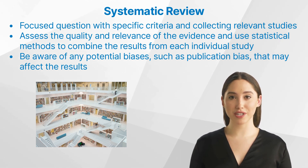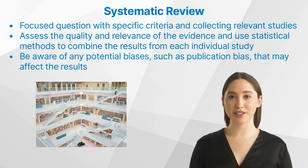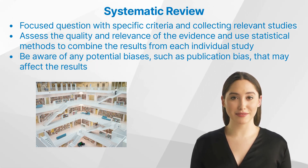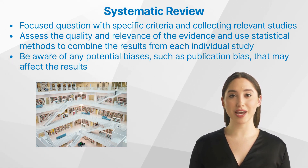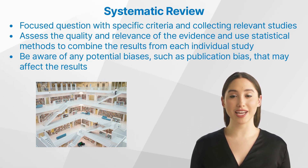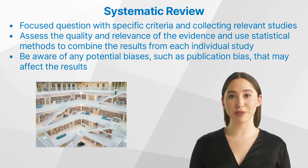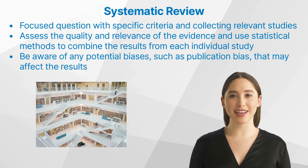Medical writers should ensure that the studies included in their systematic review are of high quality and relevant to the question being asked. They should also be aware of any potential biases, such as publication bias, that may affect the results. Sources for systematic reviews include peer-reviewed journals, published clinical trials, and databases such as PubMed, Embase, and the Cochrane Library.